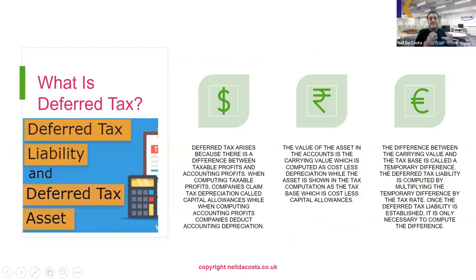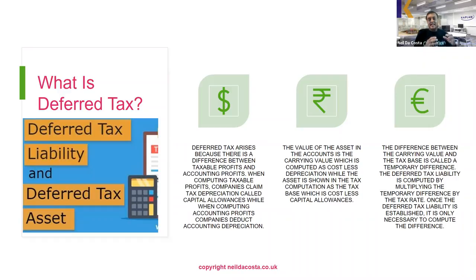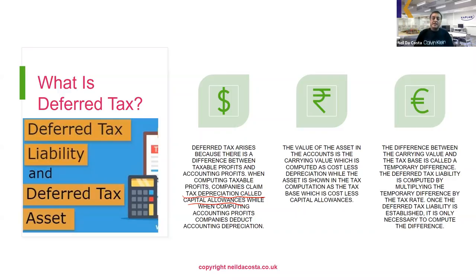So what is deferred tax? Deferred tax arises because there's a difference between taxable profits and accounting profits. We compute accounting profits for our financial statements and taxable profits for the tax authorities. When computing taxable profits, companies claim tax depreciation called capital allowances, while for accounting profits we compute accounting depreciation. The value of the asset in the accounts is called the carrying value or net book value — simply cost less depreciation.